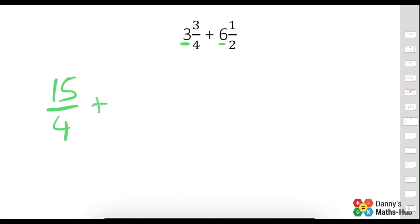Add 6 times 2 is 12. Add the 1. It's 13 over 2. Then we do as usual. Multiply the denominators to get 8.